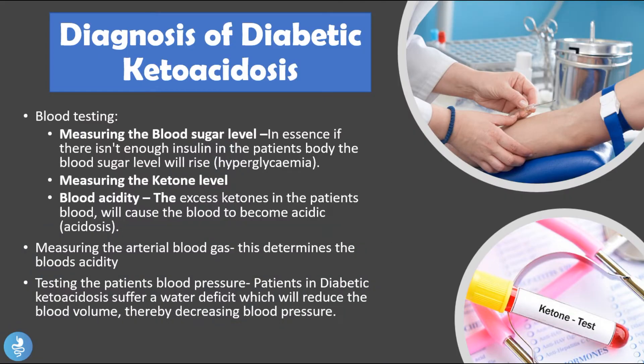For diagnosis of diabetic ketoacidosis, blood testing can measure blood sugar levels — these patients typically present with hyperglycemia because without enough insulin the blood sugar level rises. We can also measure blood ketone levels: high amounts of acetoacetate, beta-hydroxybutyrate, and acetone in the blood confirm DKA. Additionally, measuring blood acidity shows that excess ketones cause the blood to become too acidic, resulting in a low pH.